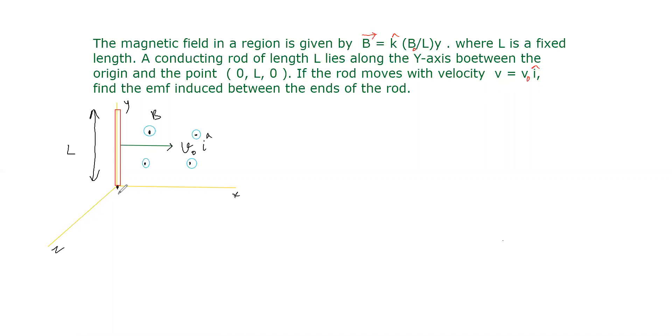Now we take this point as origin, this point as (0, L, 0). Here this rod of length L is placed in a varying magnetic field. This magnetic field is out of the plane. The field B is given as B = B0/L × y in the k direction.